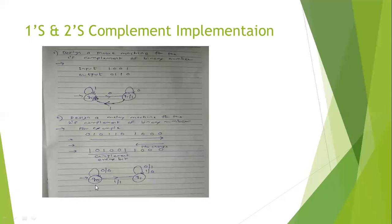This is the diagram for the Mealy machine where we have two states q0 and q1. In Mealy machine, input and output are both associated outside the state. Whenever it encounters zero, output is also zero; when input is one, output is also one. For state q1, whenever we get zero as input, we perform the complement. So we keep zeros as-is, keep the first one as-is, and after that we complement every bit: zero becomes one, one becomes zero. This is the 2s complement using Mealy machine — covering the implementation of 1s and 2s complement using Mealy machine and Moore machine. Thank you.